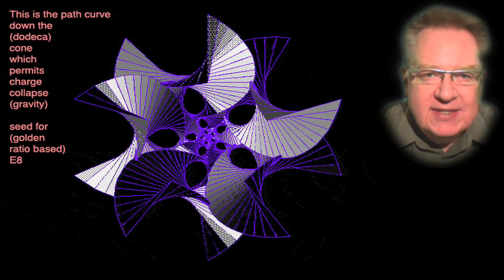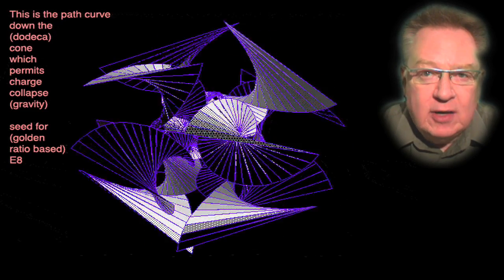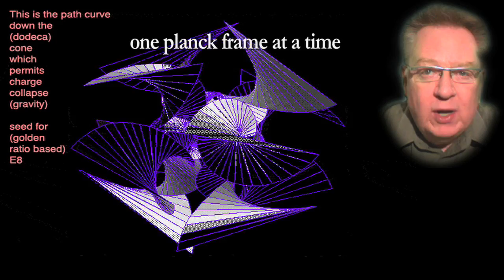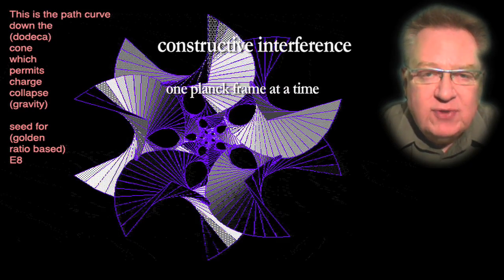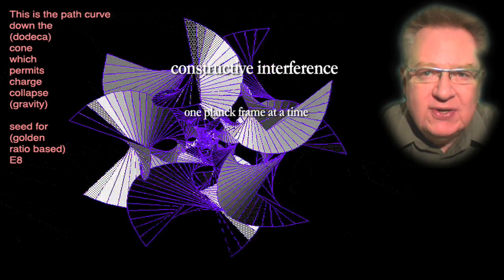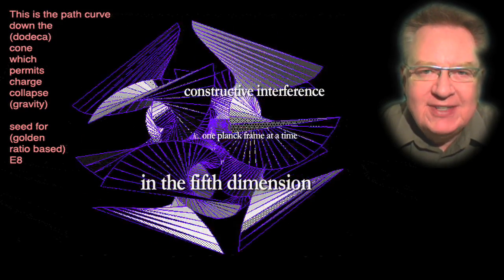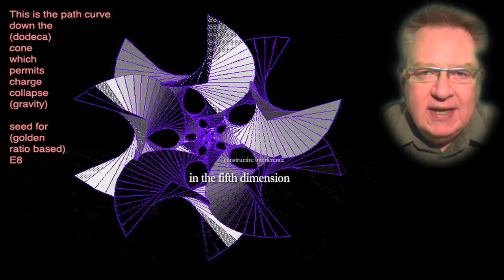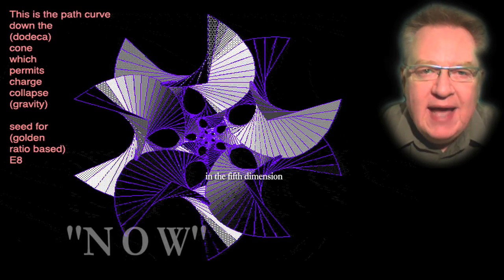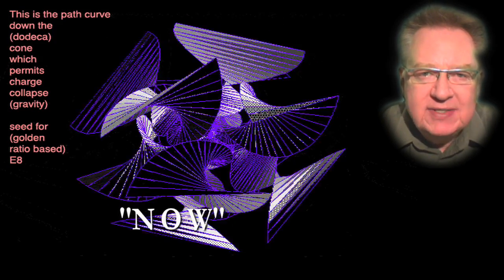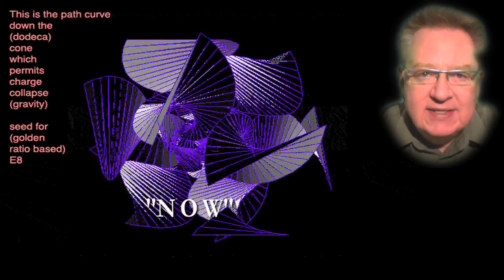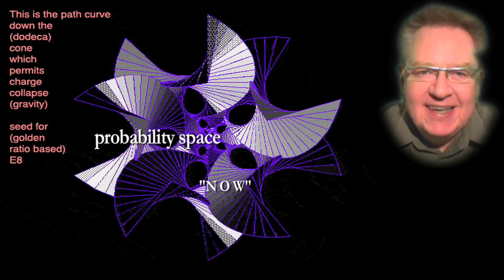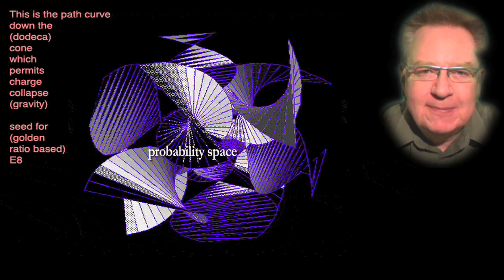For me, this all ties back into the idea that our observed universe is being constructed one Planck frame at a time by constructive interference occurring in the 5th dimension, which, as I've been saying from the outside of this project, is where our now is actually being observed from instant to instant, as it's chosen from a probability space of possible pasts and futures.